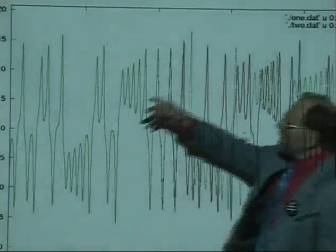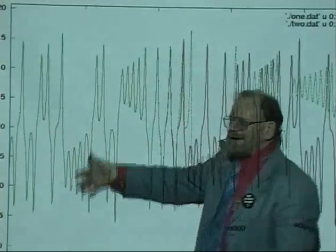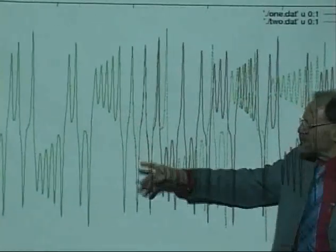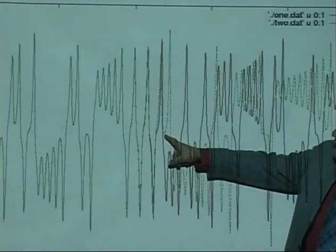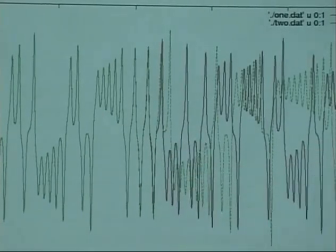So the red and the green points track each other for a while, and then they start to diverge a little bit until right here, where they get torn apart.